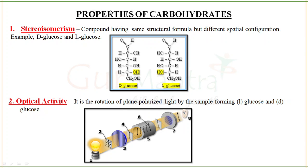We are going to see the properties of carbohydrates. The first property is stereoisomerism — compounds having the same structural formula but different spatial configuration. Example: D-glucose and L-glucose. The formula of both structures is the same; the difference is only in the hydroxyl group.